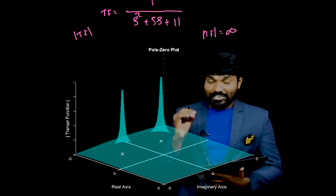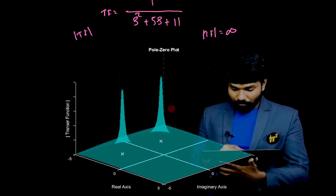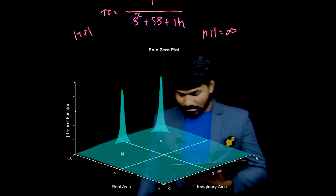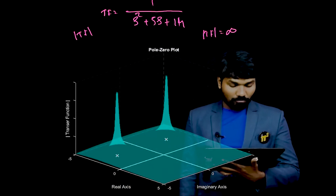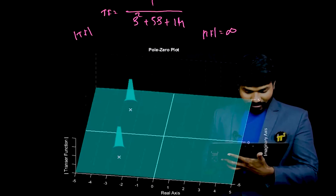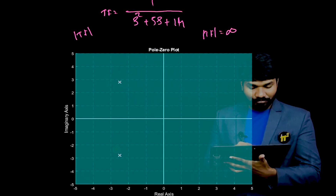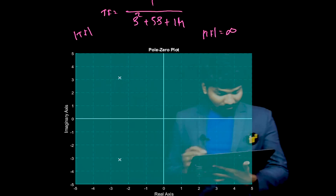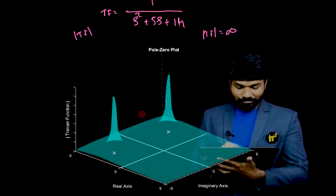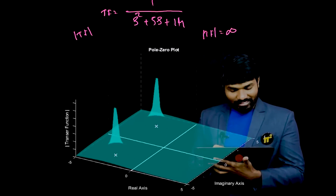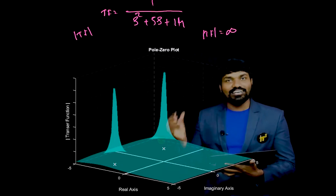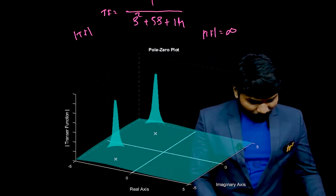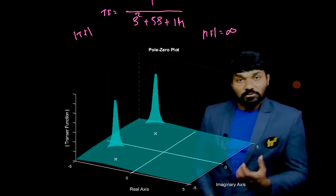The third dimension, which you cannot put on paper, has been shown here to represent the magnitude. Let me now change the transfer function — I will change the constant from 11 to 14 and see how the poles change. Let's make it 16. Look at the 3D view — isn't it amazing? This is the reason why they are called poles: because they are looking like poles at those particular points. I think you now have a clear idea of why the roots of the denominator are called poles — because they appear like poles. Simple.